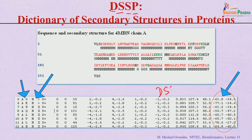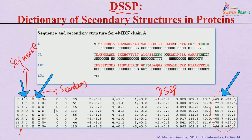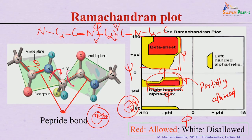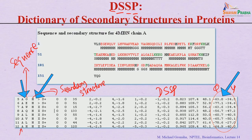The DSSP output provides chain information, the amino acid sequence, and the secondary structure assignment. It also shows hydrogen bonding patterns — residue numbers with plus 1 indicating forward direction and minus 1 indicating reverse direction — along with energy values. Finally, the phi and psi values are listed; you can see that most residues fall within the expected Ramachandran map ranges, for example the alpha helix region.